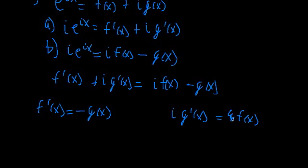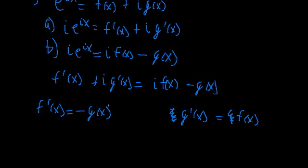Comparing the real parts, we get F prime of X is equal to minus G of X. And comparing the imaginary parts, we get I times G prime of X is equal to I times F of X — and we can drop the I on both sides to simplify. So now we're left with two expressions that describe F of X and G of X. Starting with the first: if we have a function G of X and take the derivative, we get F of X. And if we take the derivative of that, we get our original function G of X back, except multiplied by a minus sign.